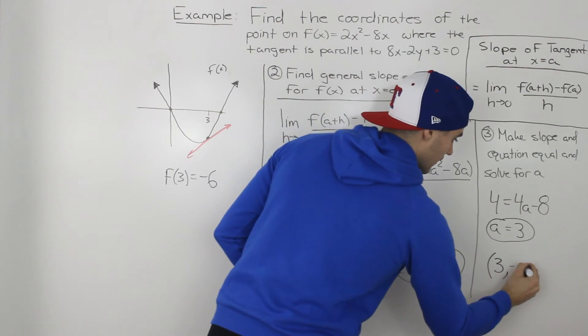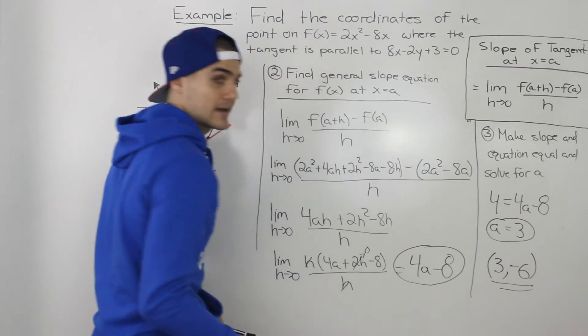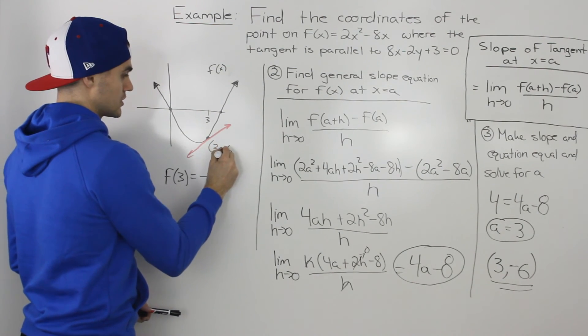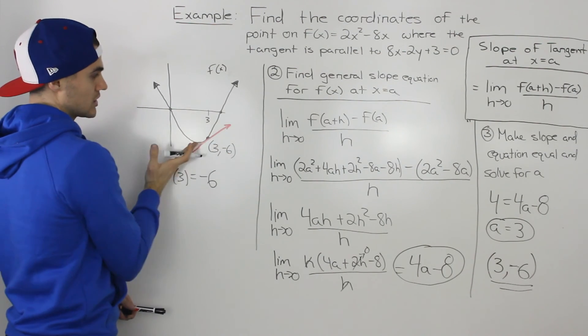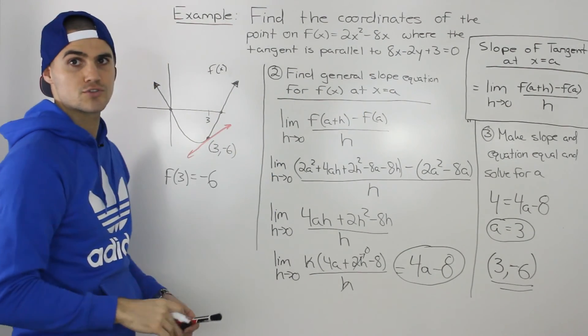So that there is our final answer. At a coordinate of (3, -6), which is here, this coordinate on the function, the slope of the tangent is parallel to this line, or the slope of the tangent is equal to 4.